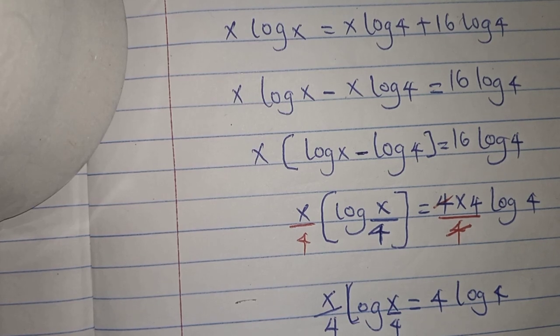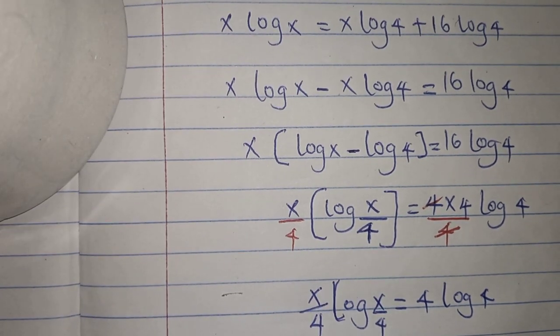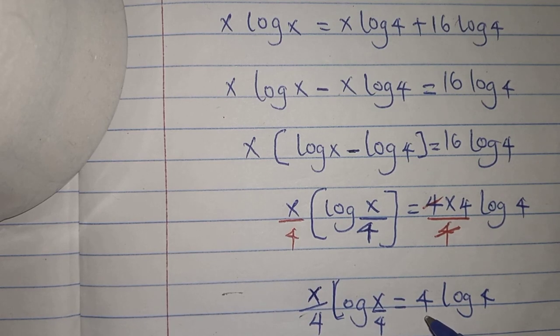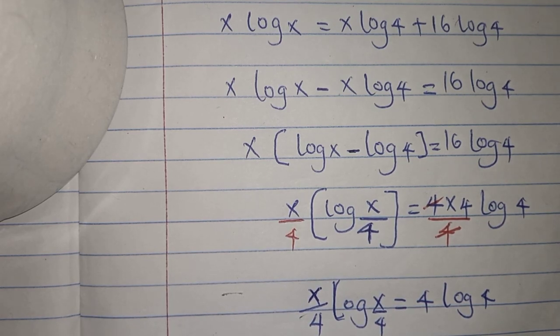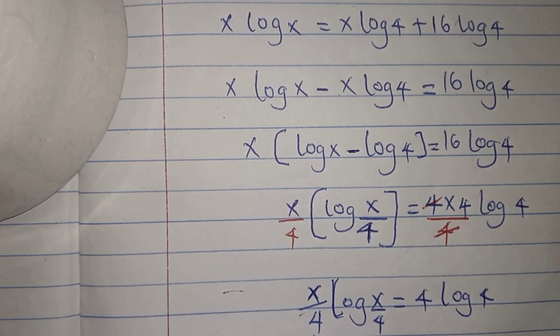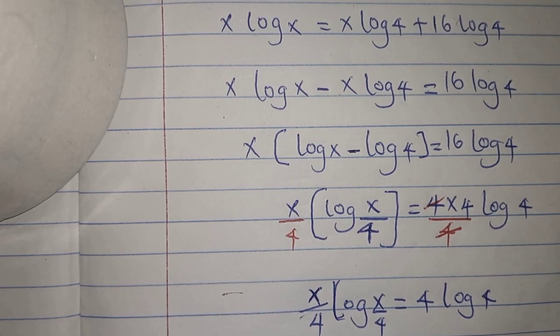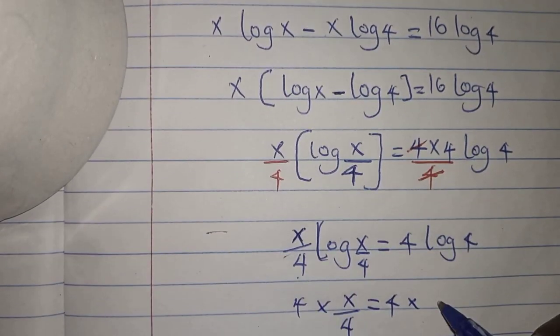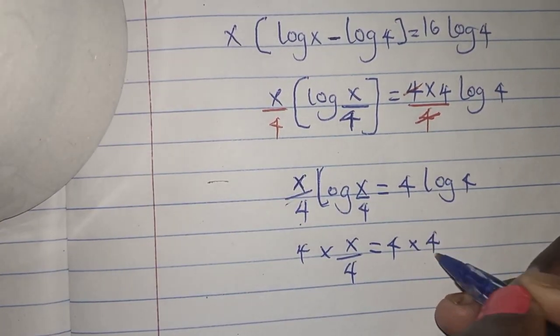So our next step, if you can relate on the left side and on the right side, you can clearly see that x divided by 4 is equals to 4. So x divided by 4 is equals to 4. I'll divide both, I'll multiply both sides by 4, by 4. And on the other side, I'll divide by 4.